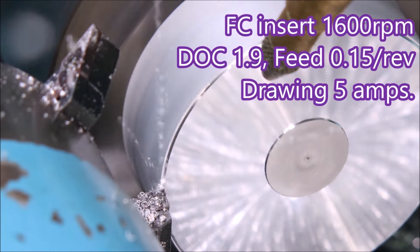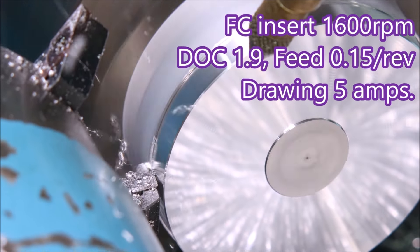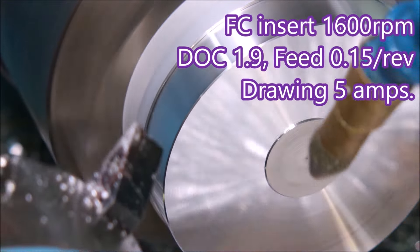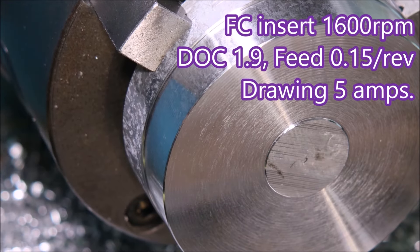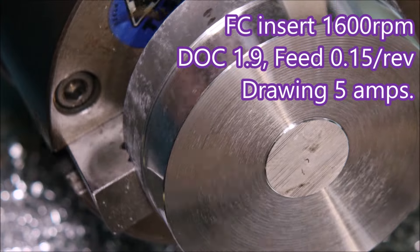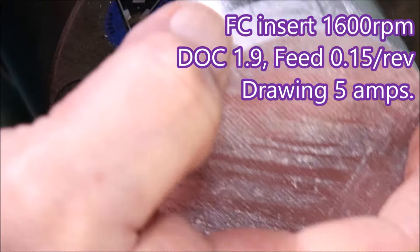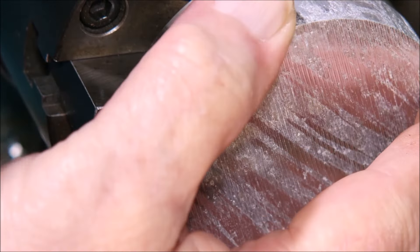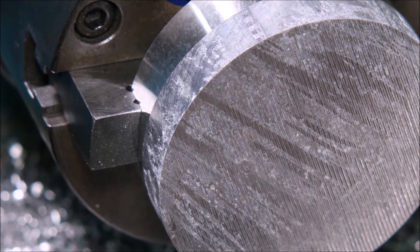Here I'm using a CCGT FC insert to face and turn this end of the part, and then I take it out, turn it round, and face it off again using the same tool. Then we change over to a parting tool.